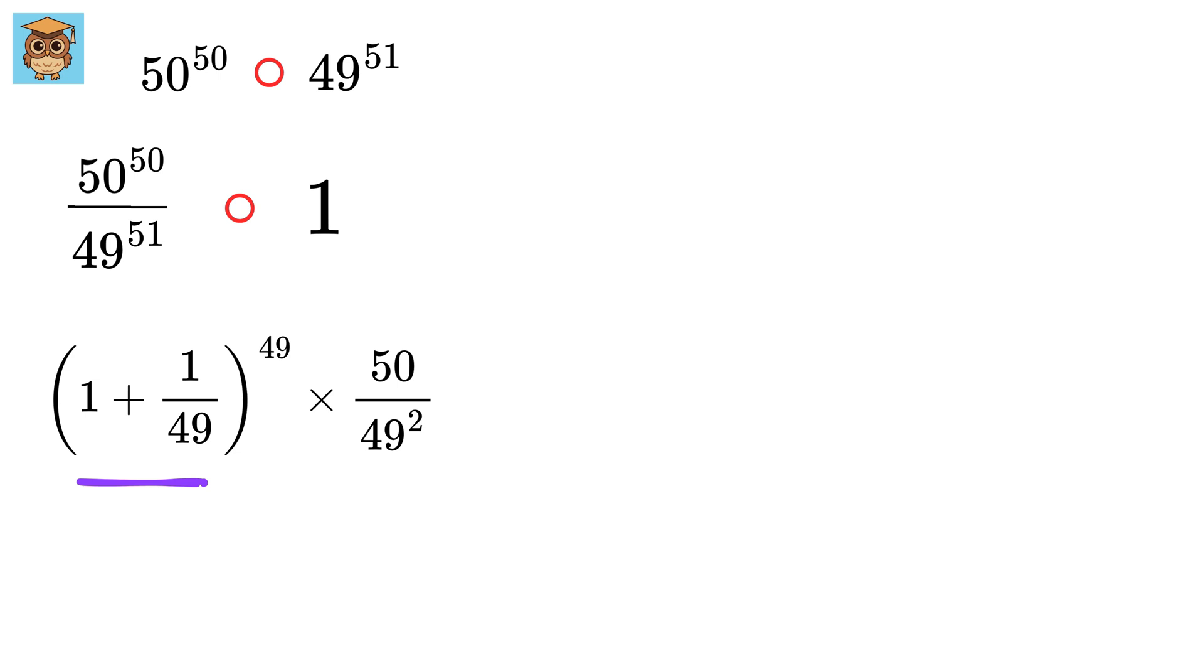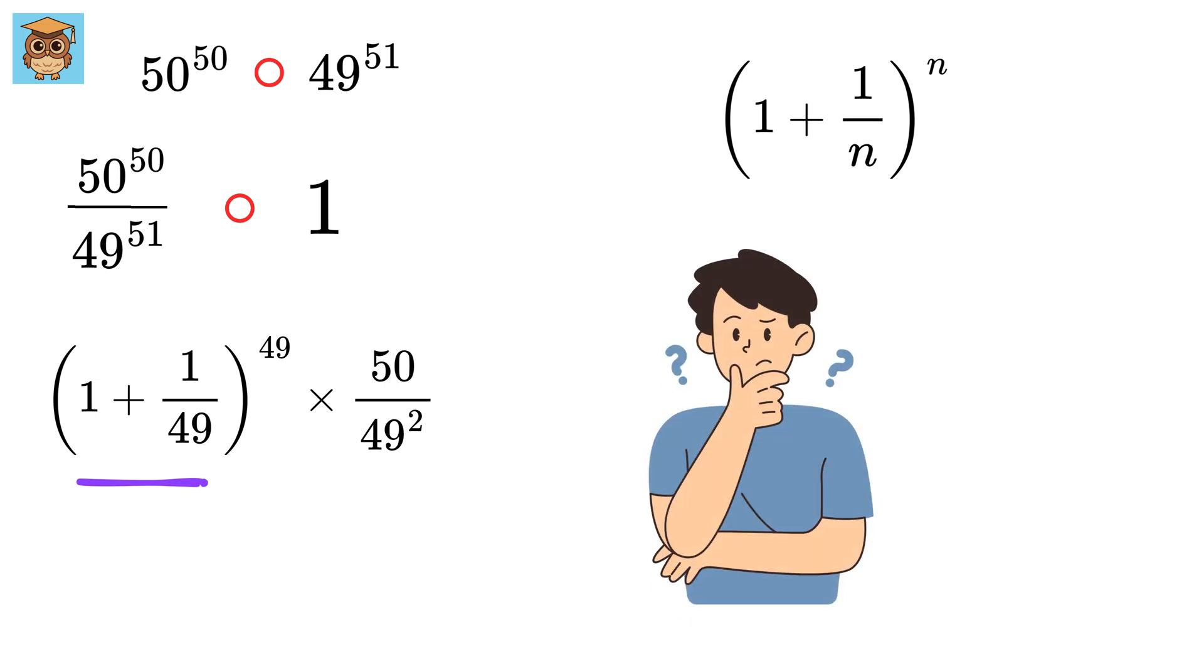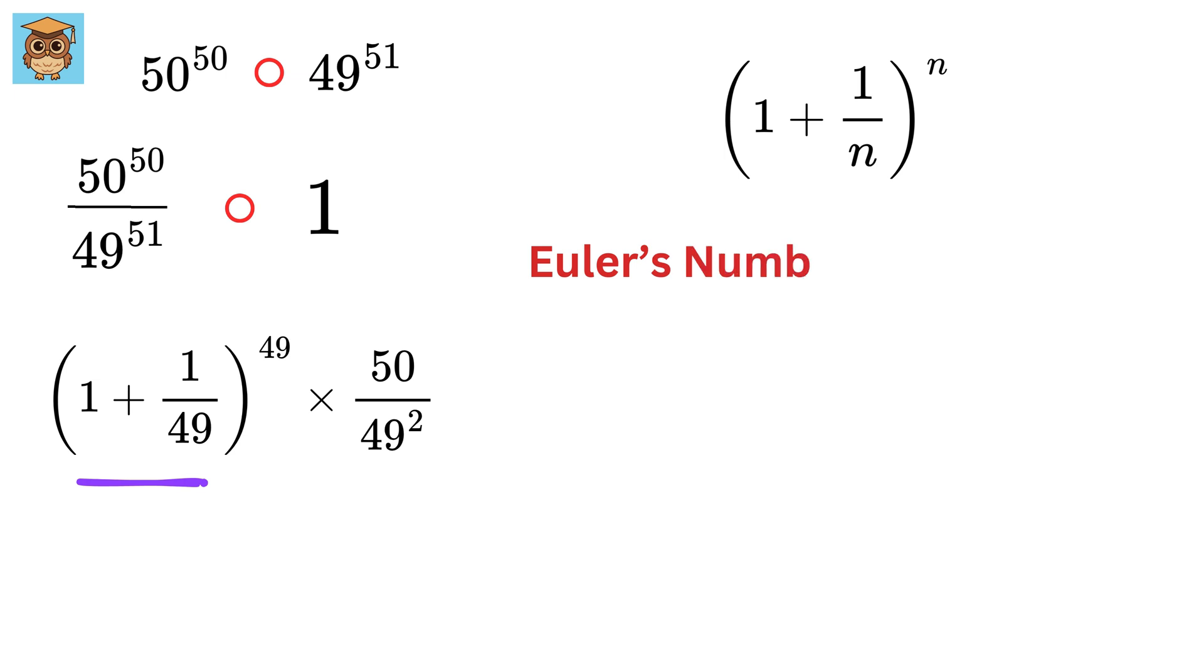If you notice this thing, it is of the form 1 plus 1 over n whole raised to n. Now you can see where I am going. You might have heard about Euler's number e, which is nearly 2.718. Its definition is given by the limit of 1 plus 1 over n whole raised to n, as n goes to infinity.